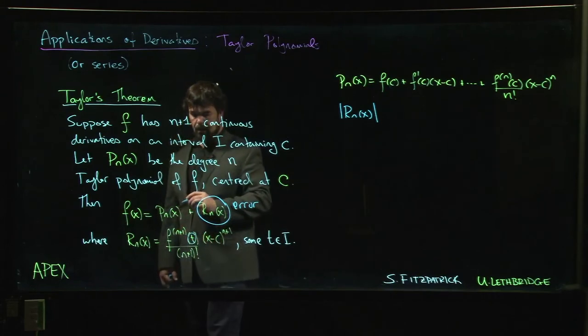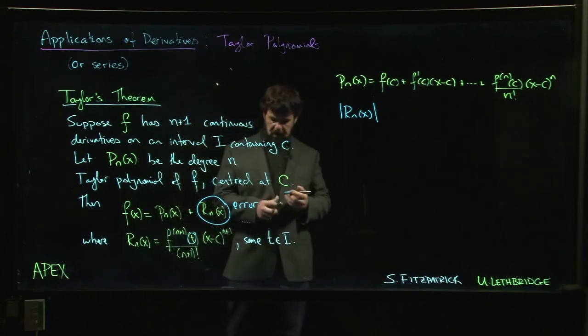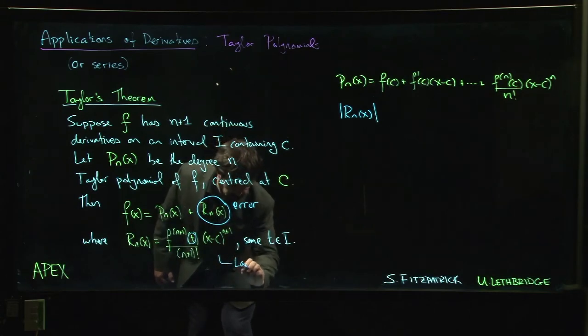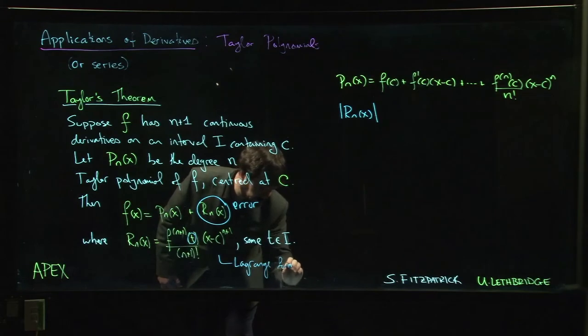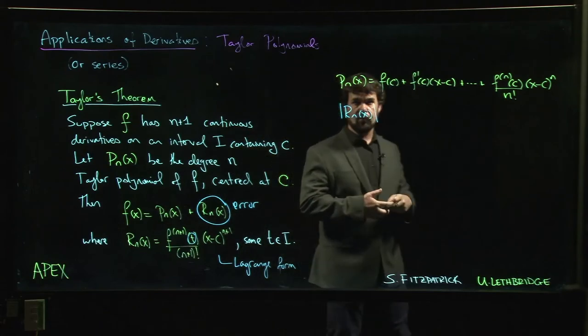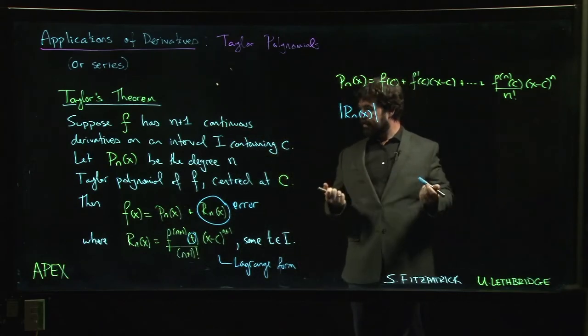You choose the point where you're centering your Taylor polynomial, and now we're trying to decide for a given x how good is our approximation. We've chosen our x - the only other wild card here is this t.